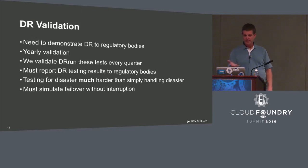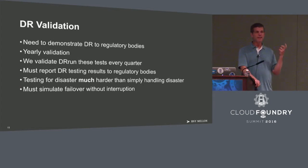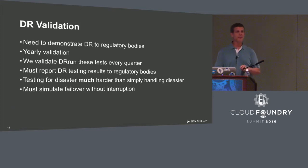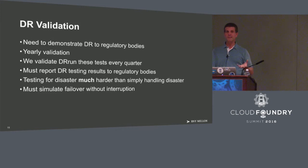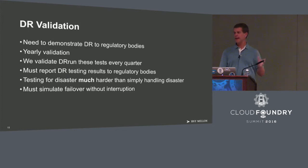There are a lot of things that have to be incorporated into our entire platform at all times. We also have to validate this — we have to prove to regulatory bodies that we can recover from a disaster. It turns out it's easier to go through a real DR event than to test for one. Because if you have to test for a DR event, you have to keep all your existing stuff going and gradually move it to another data center. Whereas with a real DR event, it's just down. So we have to periodically prove and simulate failover accurately.